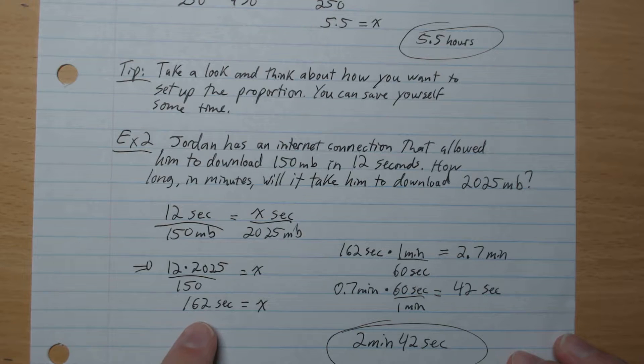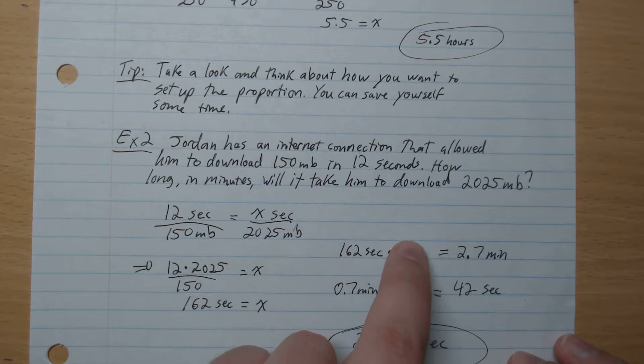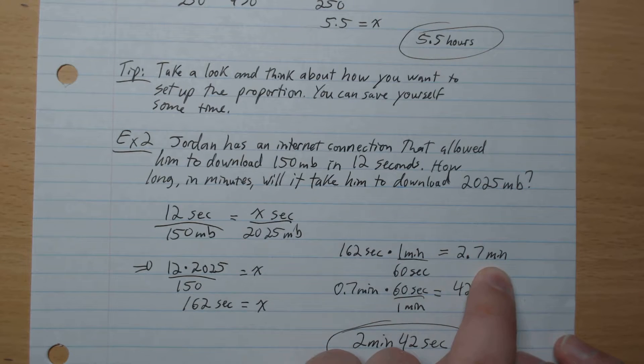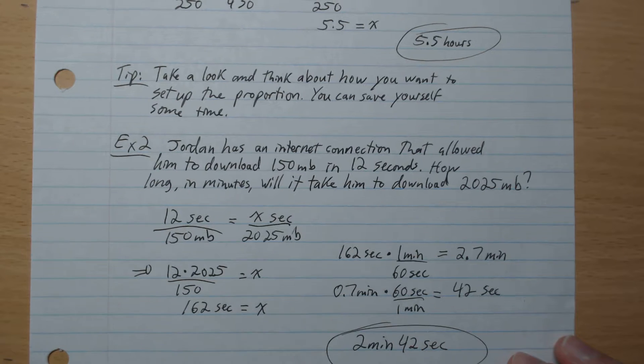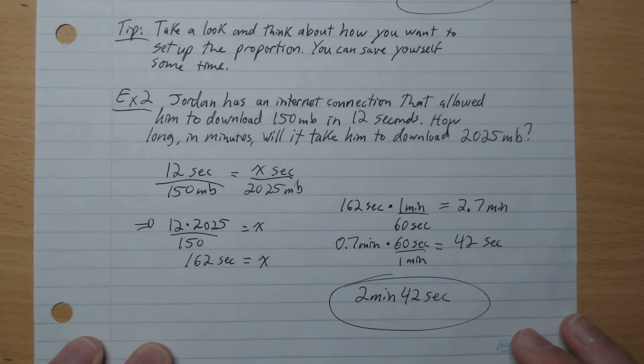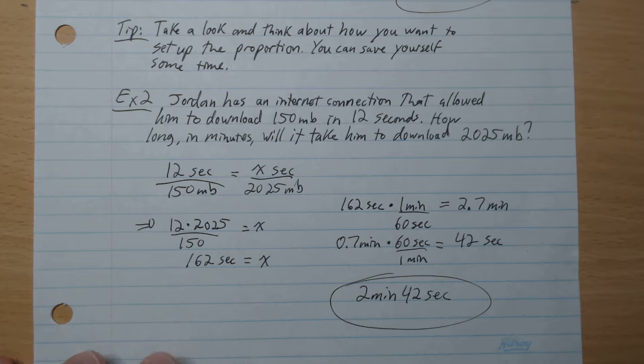We want to convert seconds into minutes, so we have one minute over 60 seconds. The seconds cancel out, which gives 2.7 minutes. We're going to convert the 0.7 minutes back to seconds. So 0.7 minutes times 60 over 1, the minutes cancel out, which gives 42 seconds. Our answer here is 2 minutes and 42 seconds.